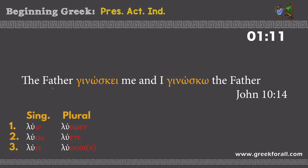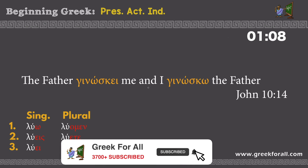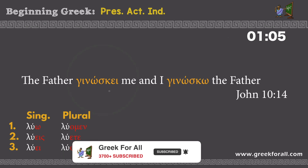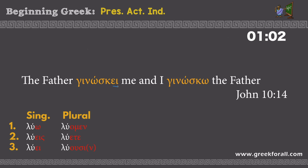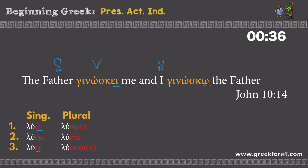Gospel of John chapter 10: 'The father ginoskei me and I ginosko the father.' Here we have the same verb with different endings. The first one is the third person singular agreeing with its subject: 'the father knows me.' The second has the first person singular ending — 'I' is our subject — so: 'and I know the father.' Full translation: 'The father knows me and I know the father.'